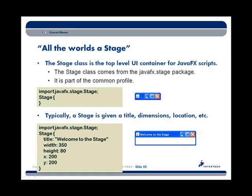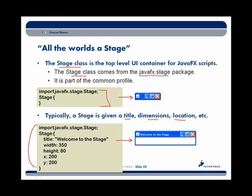Let's look at the basic building blocks of a JavaFX graphical user interface. To JavaFX, all the world is a stage. The Stage class is the top-level user interface container for all JavaFX scripts, and it comes from the JavaFX stage package. In its basic form, here's the declaration of a Stage instance producing the window we see to the right. It's typical to do more with our stage — for example, give it a title, some dimensions, and a location on the screen — producing a window with more features like a 'Welcome to the Stage' title and defined dimensions.